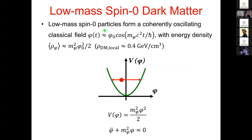In this talk I'd like to focus on scalar dark matter, which is described by a spinless field with a single degree of freedom — a real field. If these low-mass spinless particles were produced in the early universe, they can subsequently form a coherently oscillating classical field φ, characterized by two parameters: the angular frequency of oscillations, governed approximately by the rest mass energy of the dark matter particle, and the amplitude φ₀, with oscillations taking place about the minimum of a harmonic quadratic potential.